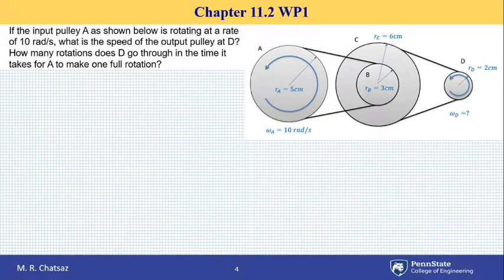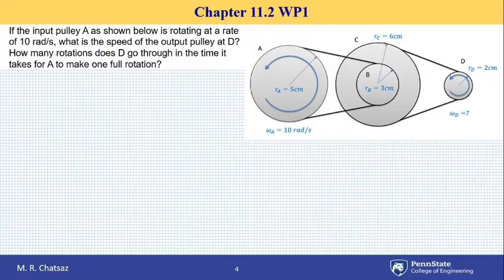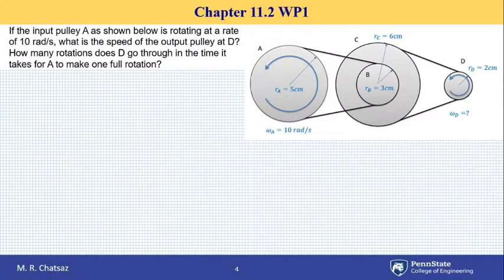Welcome back everybody. In this rotational system we have three pulleys or disks that are connected by belts as shown. The question is: what is the rotational speed of the output pulley at D if the input pulley A is turning with a speed of 10 radians per second? We are also interested to know for every revolution that A makes, how many revolutions D goes through.